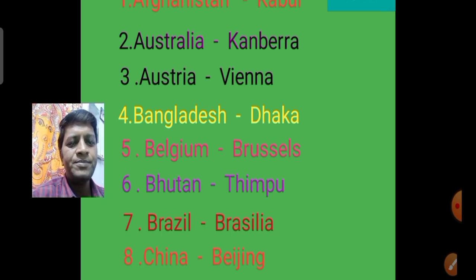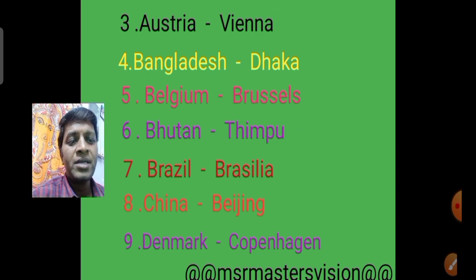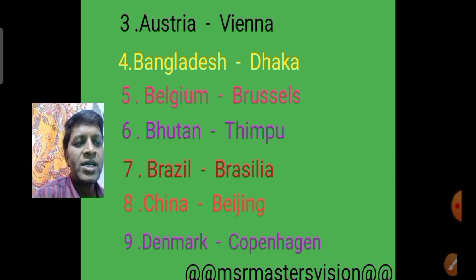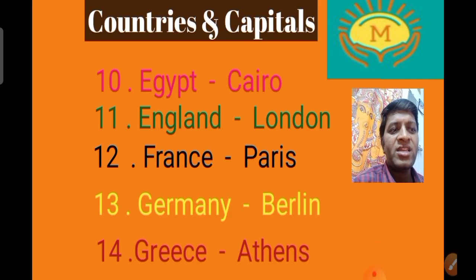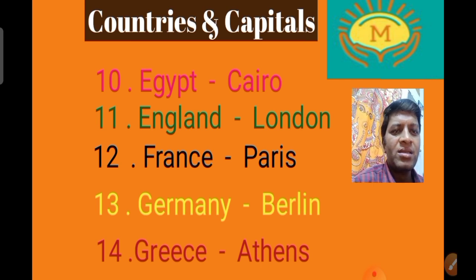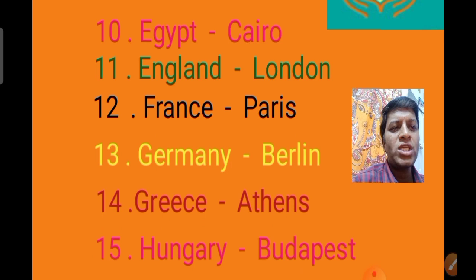The seventh country is Brazil, capital Brasilia. The eighth country is China, capital Beijing. The ninth country is Denmark, capital Copenhagen. The tenth country is Egypt, capital Cairo. The eleventh country is England, capital London. The twelfth country is France, capital Paris.